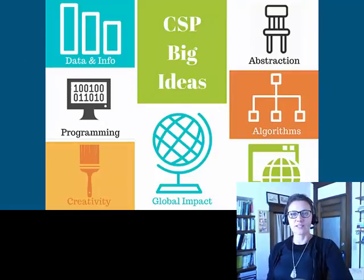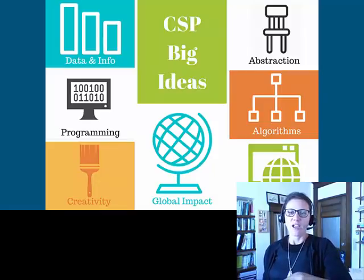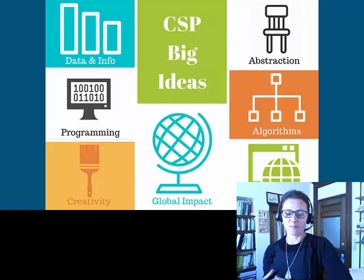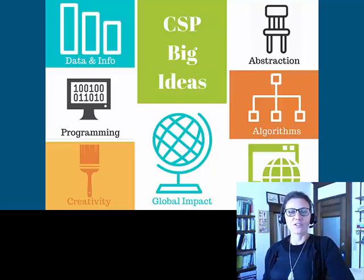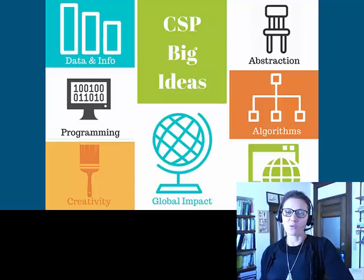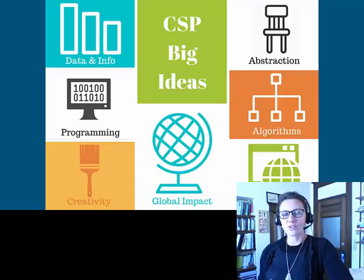The Computer Science Principles course is centered around seven big ideas in computer science that we'll discuss throughout the semester, touching on each in every unit. The first is data and information — how so much data is collected in the world and how we analyze and leverage it to solve problems. It's also about programming, creativity, and using computer science to create computational artifacts. You'll learn about the global and local impact of computer science, how abstraction is a key idea enabling complex tasks in sometimes easy ways, algorithms as structured ways to solve problems, and how the internet works.